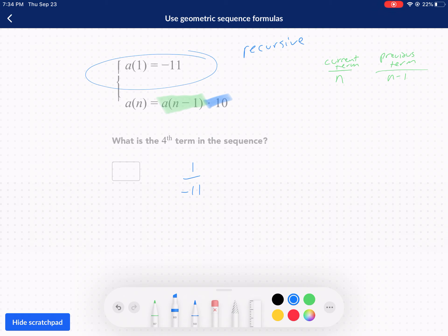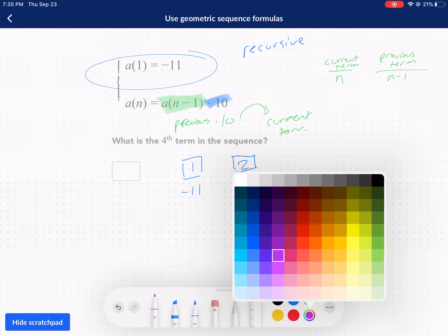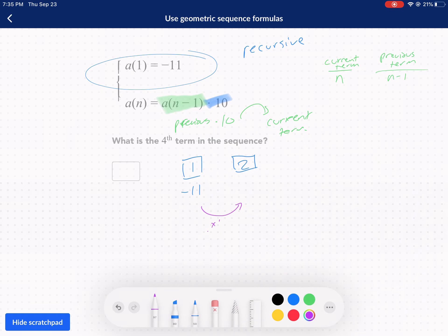So we take the previous term and we multiply that term by 10 to get the next term or the current term, I should say. Let's get to it. So I have negative 11. That's my first term. I need to multiply it by 10. That's my rate or my rate of change. I multiply it by 10. And that's going to give me a negative 110. I need to repeat this process until I get to box four. Cause we're looking for our fourth term. Boom. Fourth term.